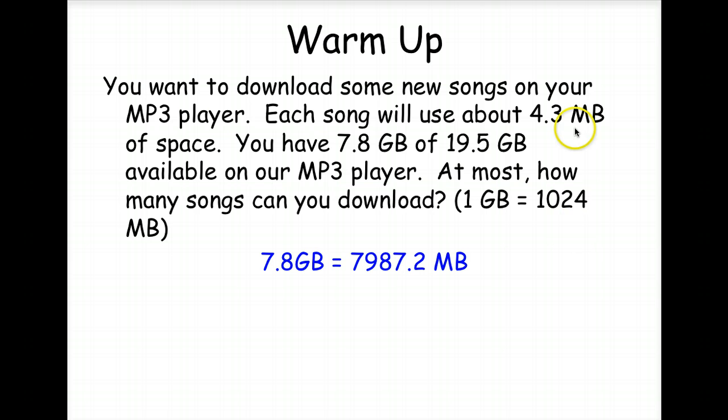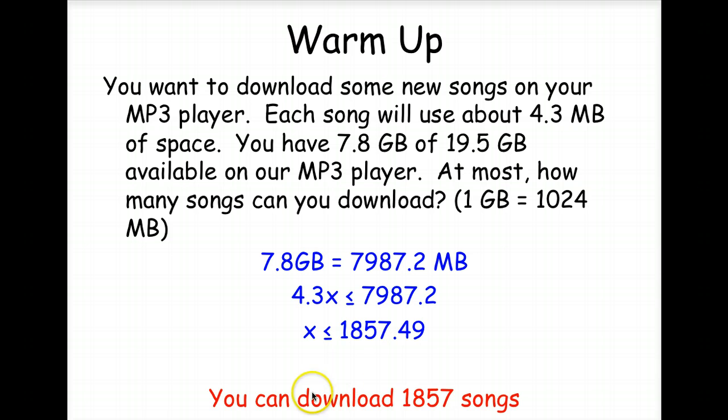Okay, the first thing we notice is we're talking megabytes and gigabytes, so we need to get everything in the same unit measure. We're going to take the 7.8 gigabytes that we have and multiply it by 1,024 to find out just how many megabytes of storage we have on our MP3 player. Then we're going to substitute. We need about 4.3 of these. We don't know how many songs at 4.3, but it has to be less than or equal to the amount of storage that we have available. So we divide both sides by 4.3. You can download 1,857 songs.